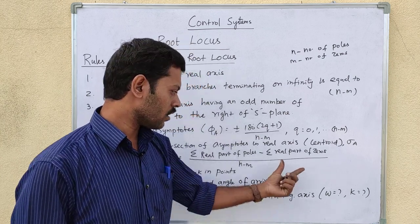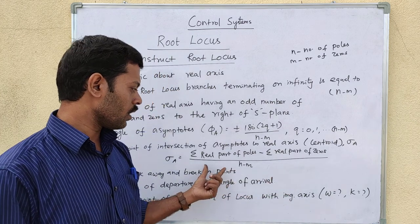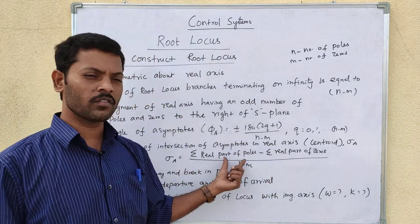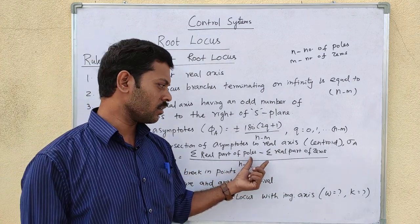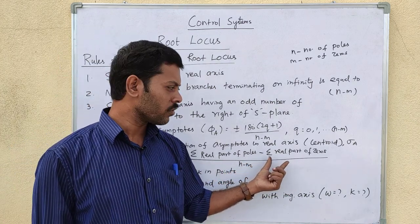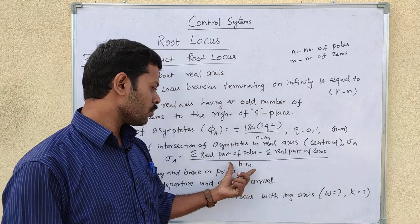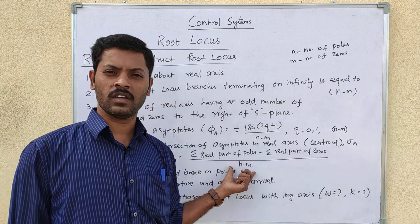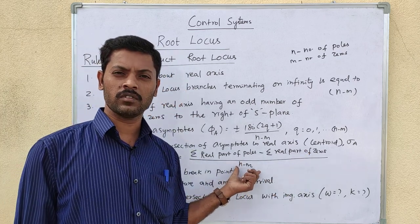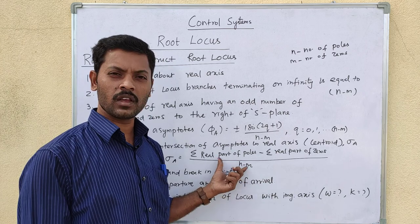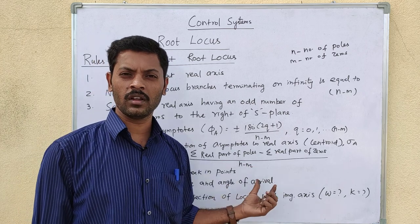The centroid is the point of intersection of the asymptotes with the real axis. The centroid formula is: sum of real parts of poles minus sum of real parts of zeros, divided by n minus m, where n is the number of poles and m is the number of zeros.